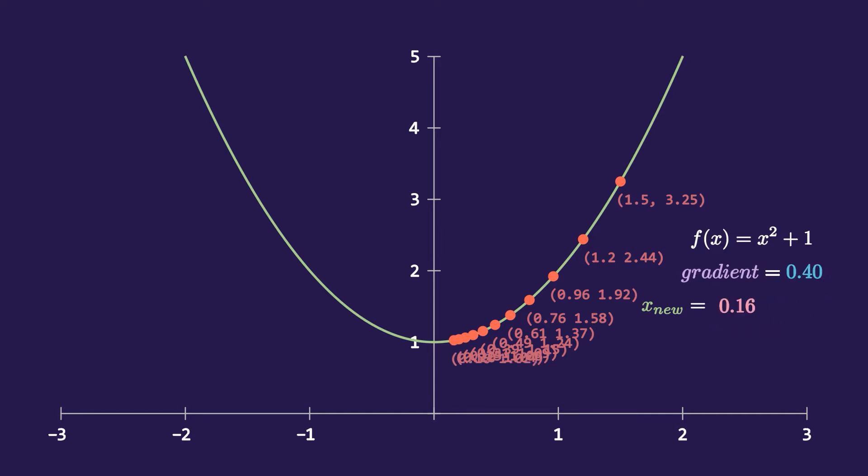After doing this 10 times we have got a point at 0.16 which is very close to our actual minimum. Doing this a few more times you can get even more closer. One thing which is worth our attention is that as close the point is getting to the actual minimum the distance between them is reducing which ensures that the point doesn't overshoot from the minimum.